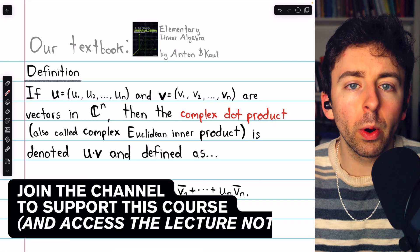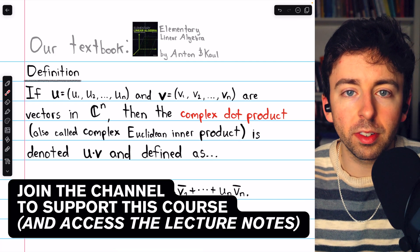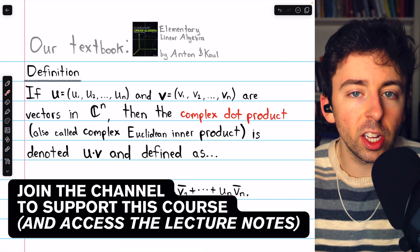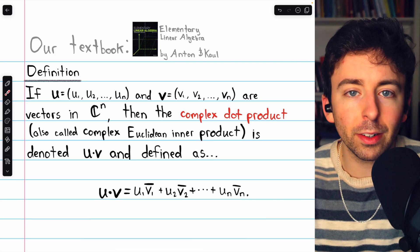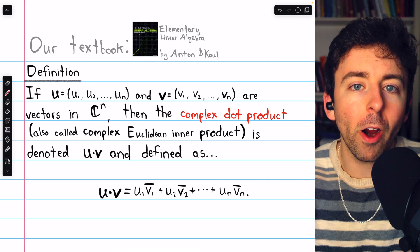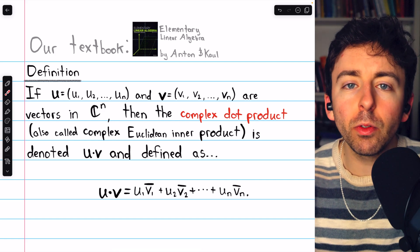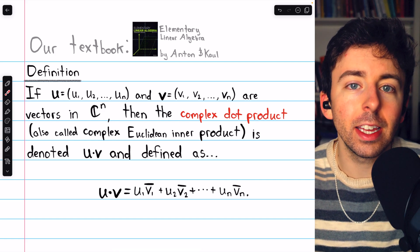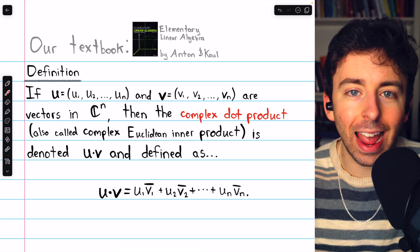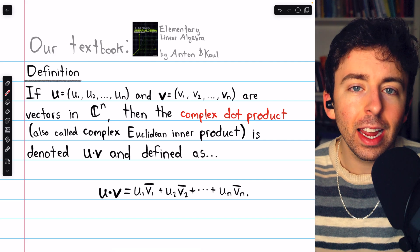The dot product played an important role in our study of the geometry of the real vector space Rn, and it will play a similar role in our study of complex n-space.